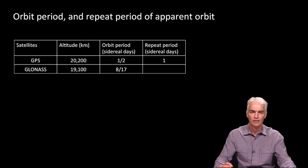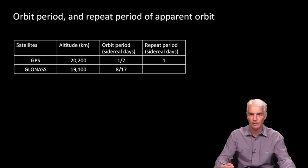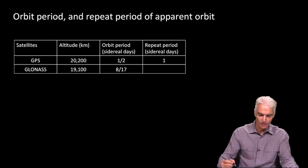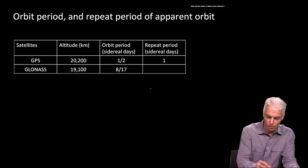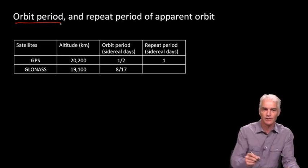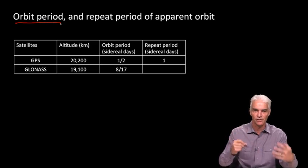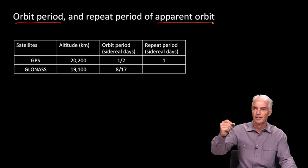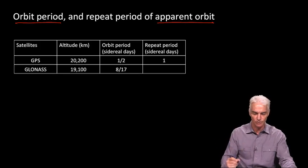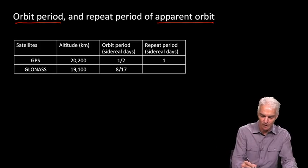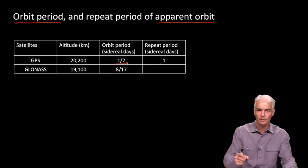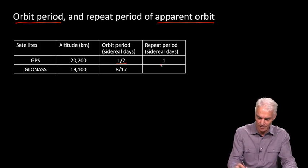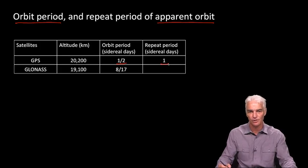So that raises the question: how long does it take for the apparent orbit of a GLONASS satellite to repeat itself? We'll start this little table and build on it as we go. We're looking at the orbit period, which is how long it takes the satellite to go back where it was in inertial space, and the apparent orbit, which is how long it takes the satellite to get back to where it seemed to be from your point of view somewhere on earth. With GPS, the orbit period is half a sidereal day, so after one sidereal day everything would be back where it started.